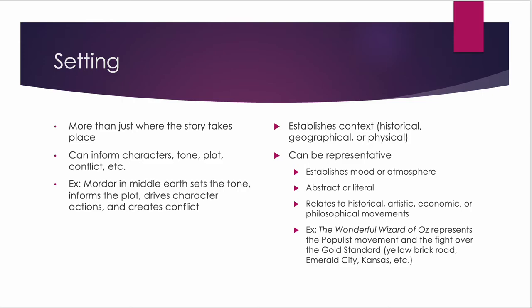For example, if you took the Wizard of Oz and put it in feudal Japan, it wouldn't make much sense. The characters are driven by certain things within the setting. The tone of the piece is driven by the setting. For example, Mordor in Middle-earth is a very different setting than the Shire. Because Frodo and Sam are there trying to return the ring, it sets the tone of the space — it makes it feel foreboding, ominous, oppressive, frightening.